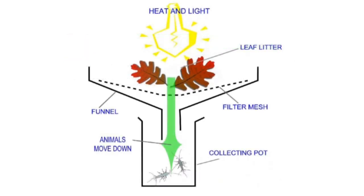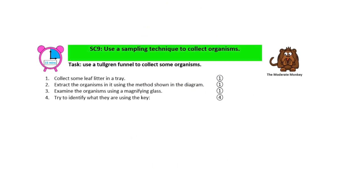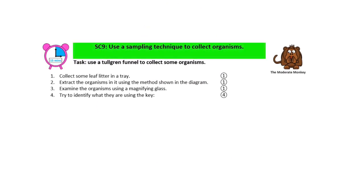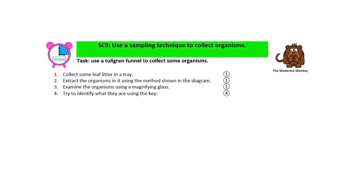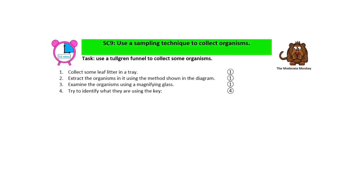The technique you're meant to use is something called a Talgrin funnel, where you collect some leaf litter and put it into a funnel. You have a hot lamp above it, and all the creepy crawlies will crawl down into the beaker below. Here are the instructions, but you probably won't have the equipment at home unless your parents happen to have a funnel.